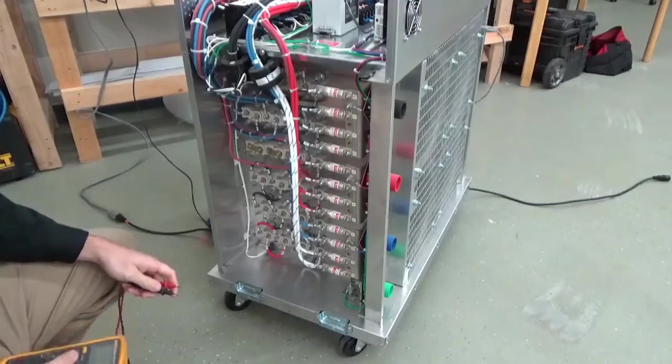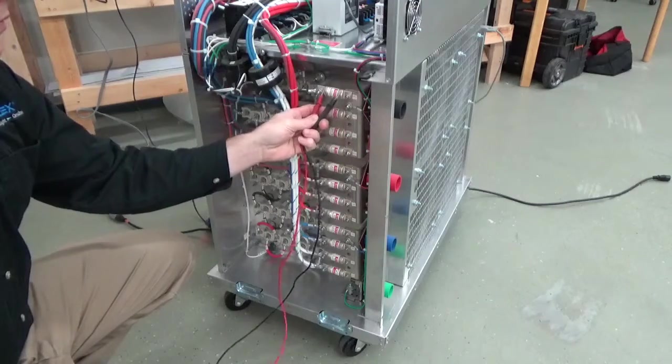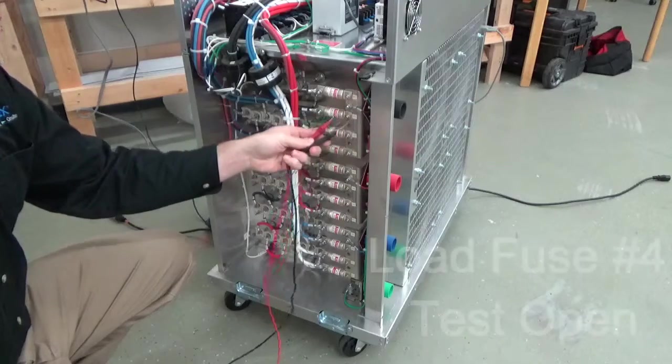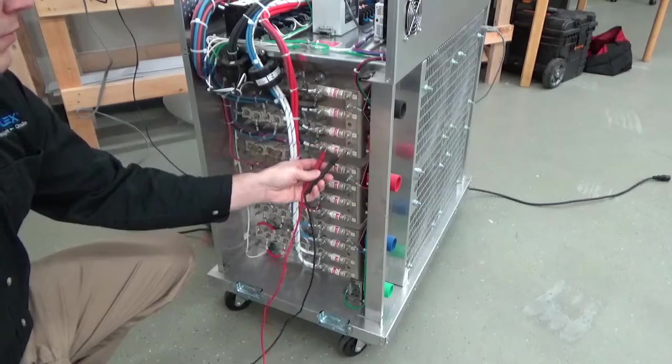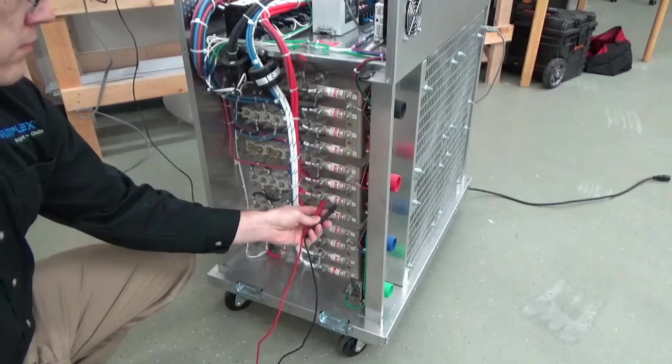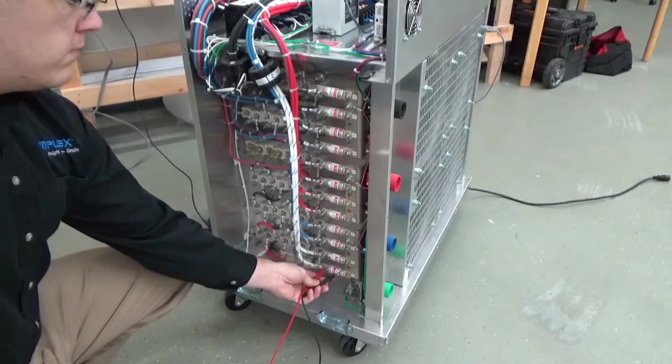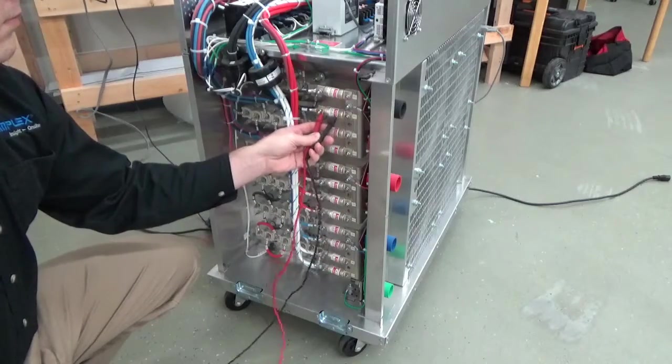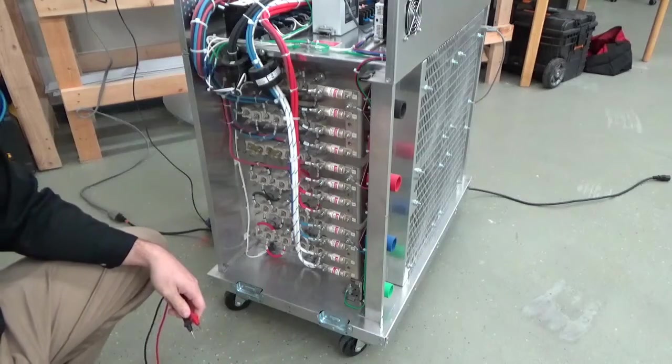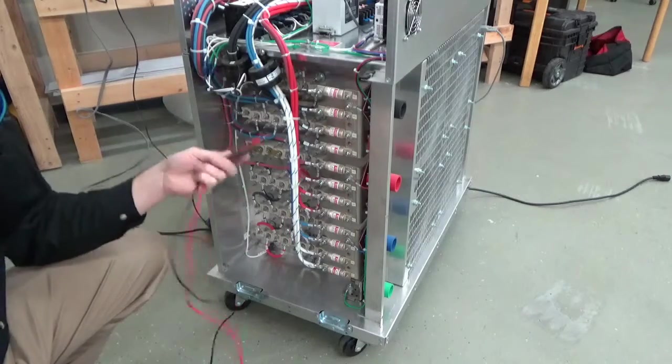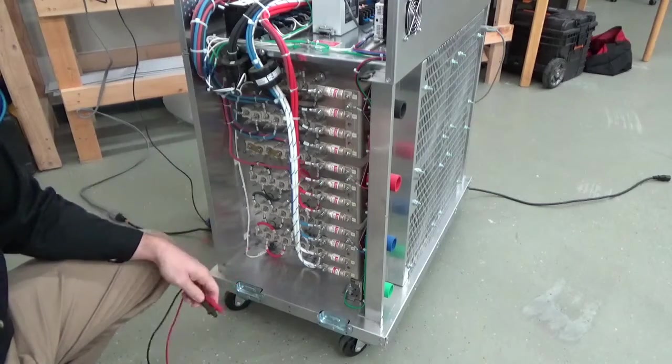Now that we have our covers removed and our power off, we can start with checking our fuses. Here we see that RF4 has no continuity through the fuse. Looks like fuse number four is blown. What we're going to do now is replace the fuse, put the covers back on and reapply power to see if that resolves the issue.